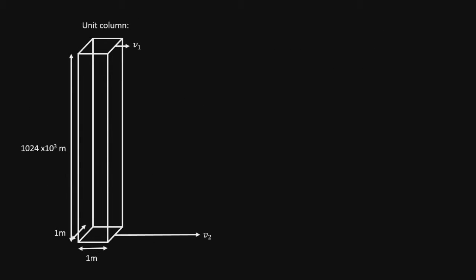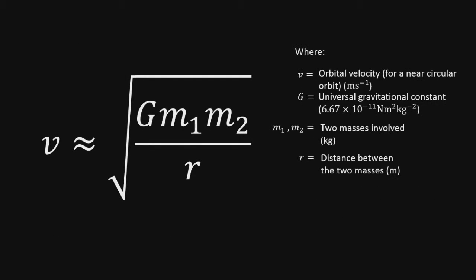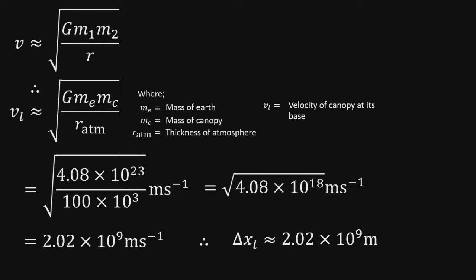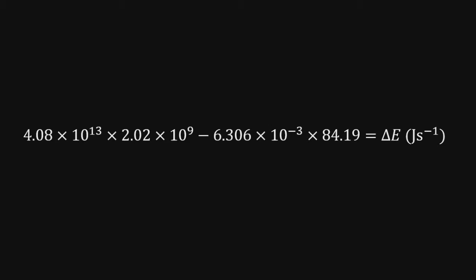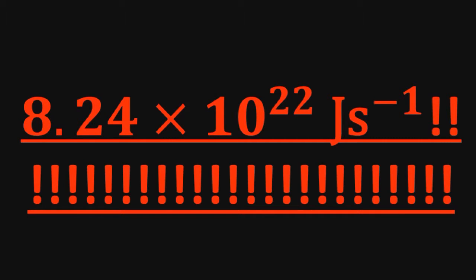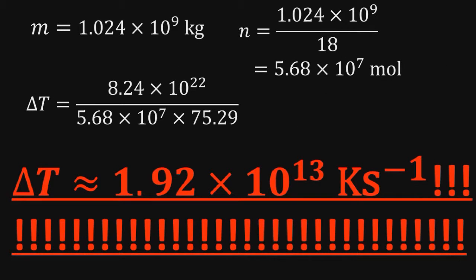Now let's evaluate the displacements of the unit column base and top per unit time — one second. Velocity is measured in meters per second, so if we work out the orbital velocities of the top and base of the column, we also have their displacements within one second. The orbital velocity of a body can be approximated by the square root of the universal gravitational constant times the sum of the two masses, all divided by the square root of the orbital radius. Using this, ΔXL equals about 2.02×10⁹ meters, and ΔXH is about 84.19 meters. Plugging these values in gives 8.24×10²² joules of thermal energy produced per second — enough to raise the temperature of the unit column of water by about 1.92×10¹³ Kelvin. I'm not even going to bother converting that to degrees Celsius, because that figure would be more or less the same.